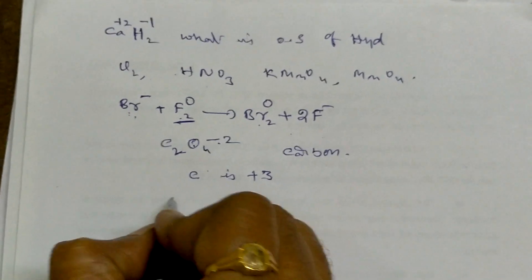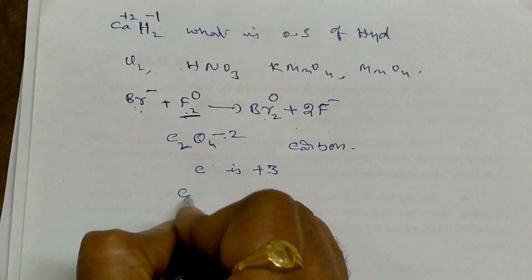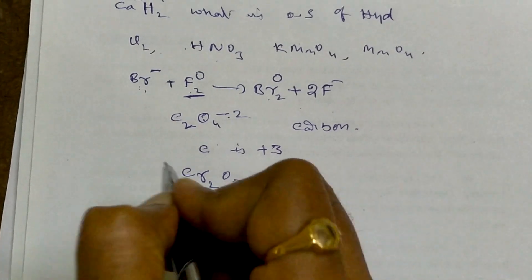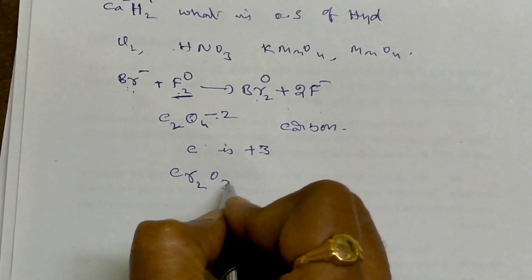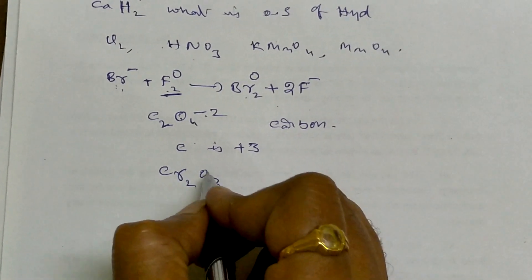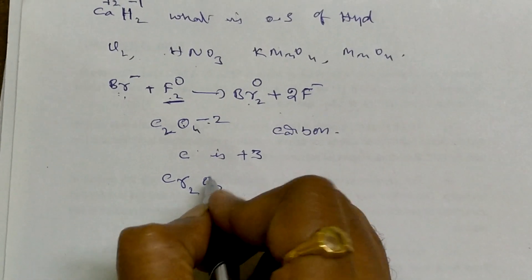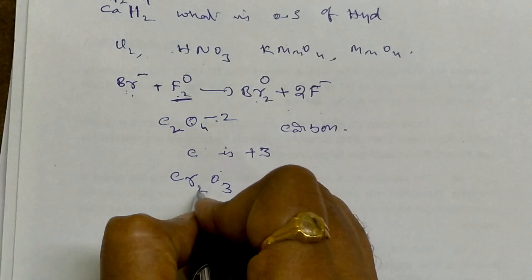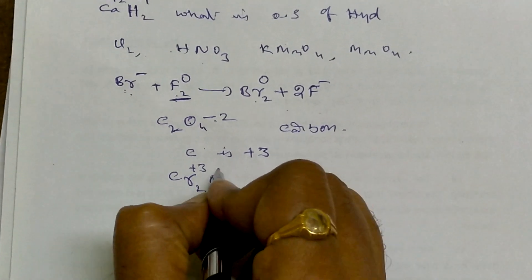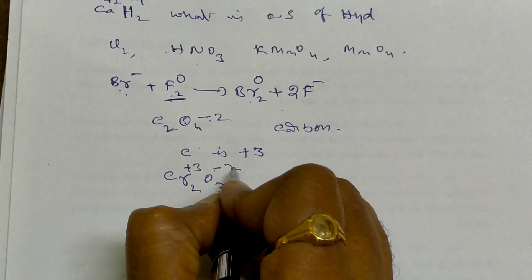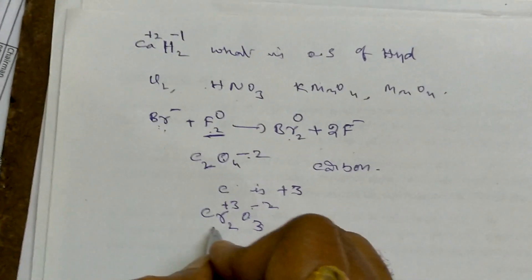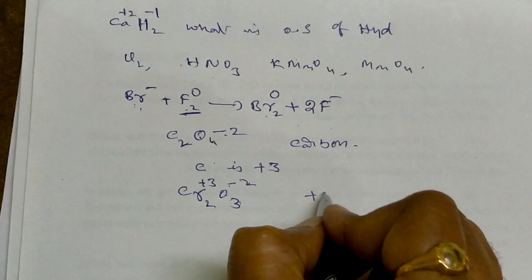Similar to this, Cr₂O₃: oxygen is minus 2, so 3 times minus 2 equals minus 6. To balance, chromium contributes plus 6 total, divided by 2 gives plus 3. So chromium's oxidation state is plus 3.